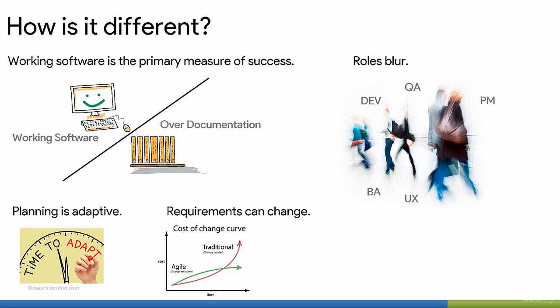Now, in terms of planning, planning is adaptive in Agile, and priorities can change for each sprint depending on what the team defines. And finally, in Agile, requirements can change, and the team is open to those changes.